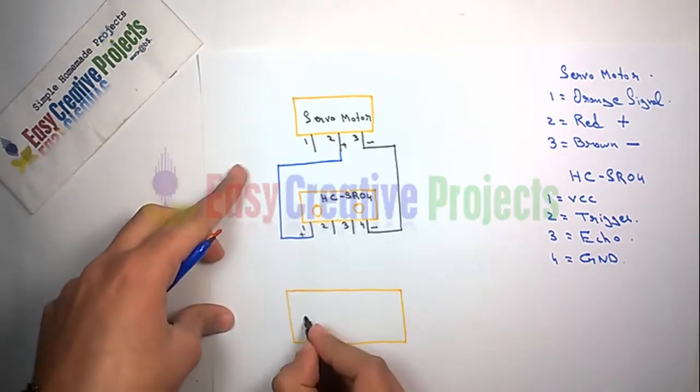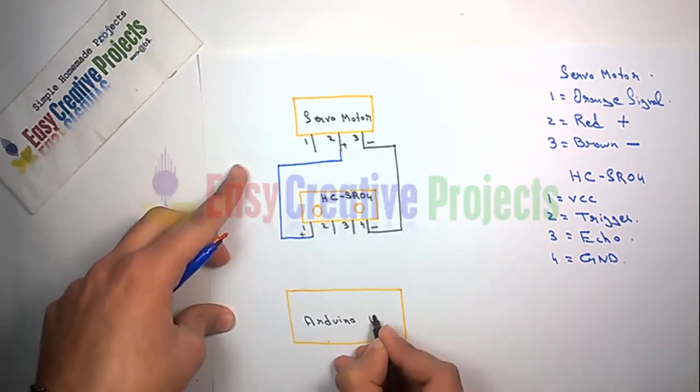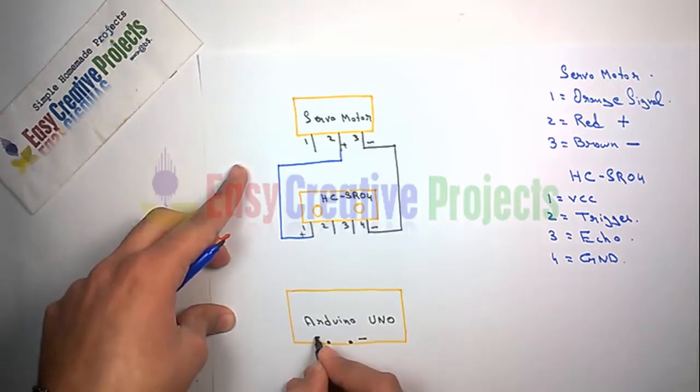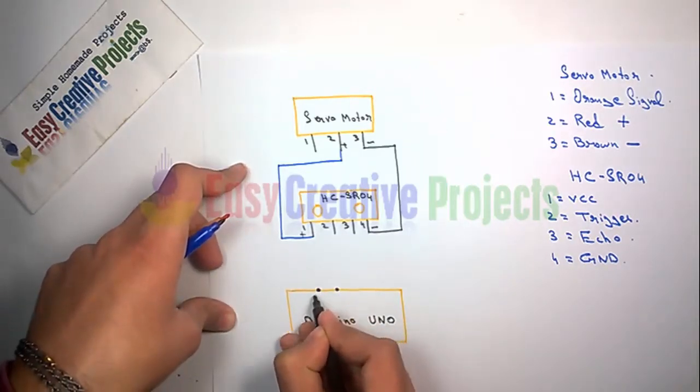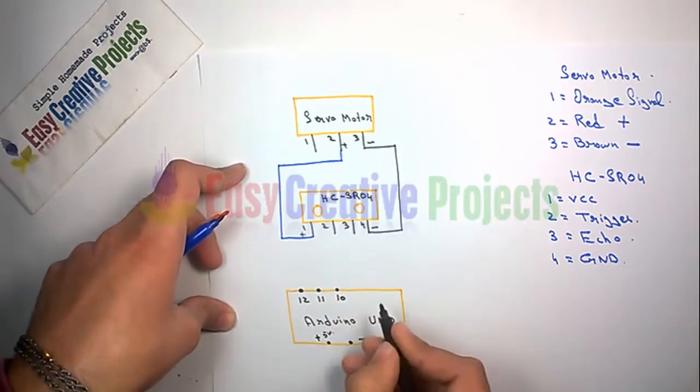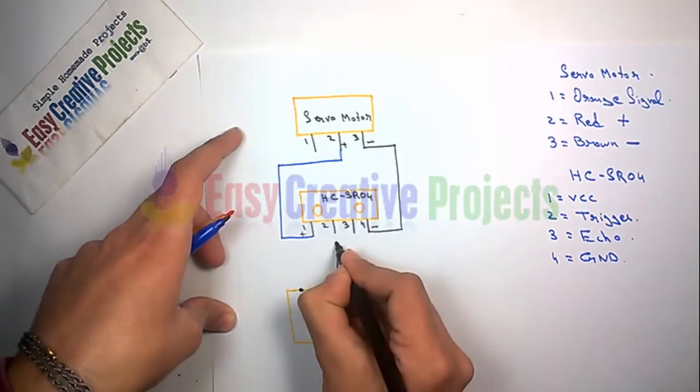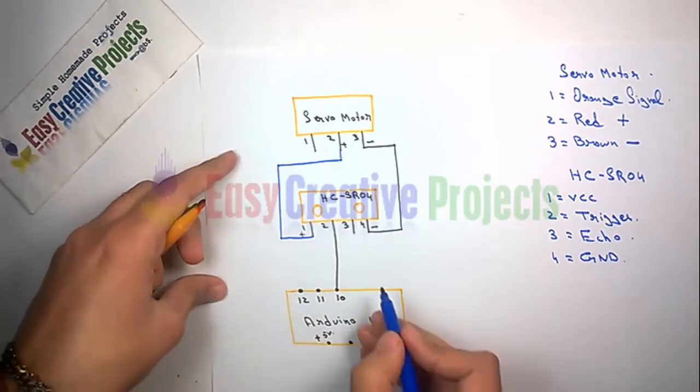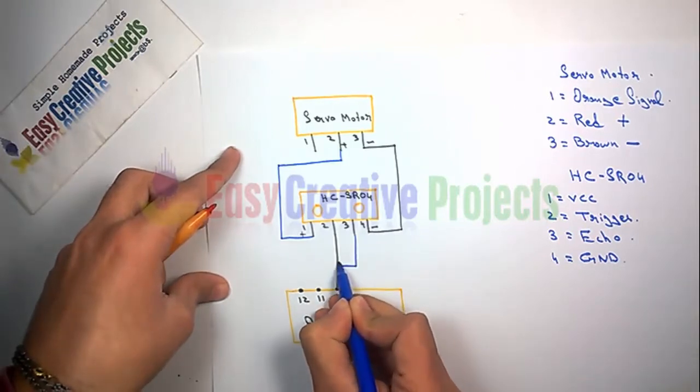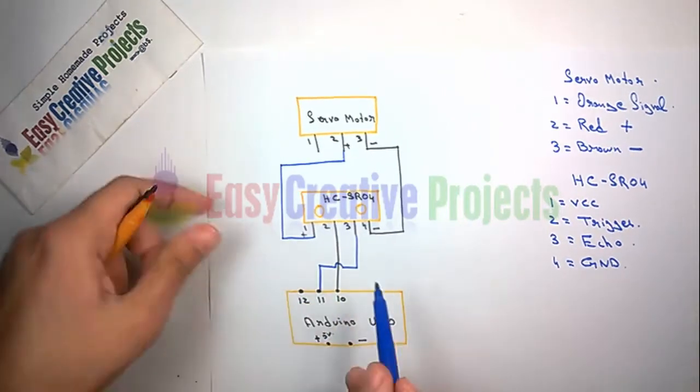In this circuit we use Arduino only five pins: 10, 11, 12, 5 volt positive, and ground pin. Now connect Arduino pin 10 wire with sensor trigger wire, and Arduino pin 11 wire with sensor echo wire.